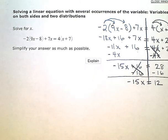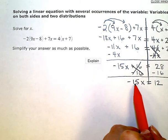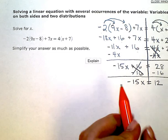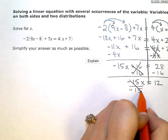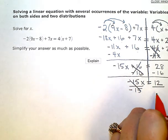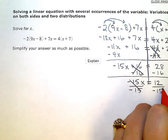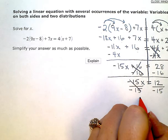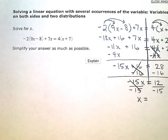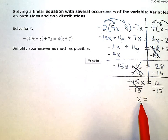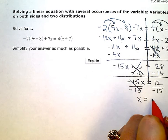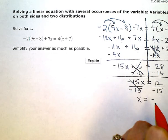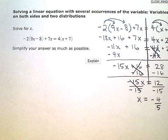So the last thing, last step, is now to just divide out my coefficient, the negative 15. I'm going to divide that out on the left and then keep my equation balanced by dividing by negative 15 on the right. After simplifying, I have x equals, and 12 divided by negative 15 will reduce or simplify to negative 4 fifths as a solution.